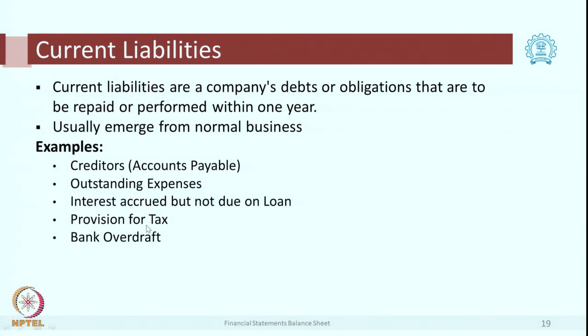Think of some more examples of current liabilities. Now we have understood non-current assets, current assets, non-current liabilities, and current liabilities. The examples will be discussed on the discussion forum. Now let us go to one special type of liability called a provision. When we discussed current liabilities, we had shown one item known as provision for tax. Why is it called a provision and not outstanding tax? If I do not pay tax on time, it should have been shown as an outstanding tax — but instead of calling it outstanding, we are calling it provision for tax.